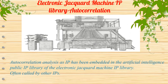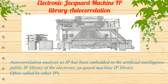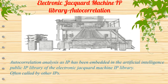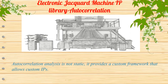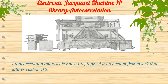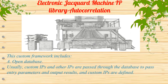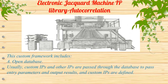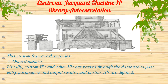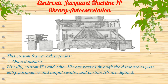Autocorrelation analysis has been embedded in the artificial intelligence public IP library of the electronic jacquard machine IP library, and is often called by other IPs. Autocorrelation analysis is not static — it provides a custom framework that allows custom IPs. This custom framework includes an open database; custom IPs and other IPs typically pass entry parameters and output results through the database, and custom IPs are defined accordingly.